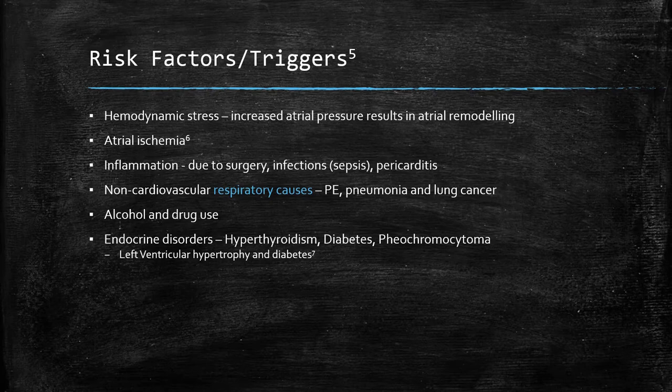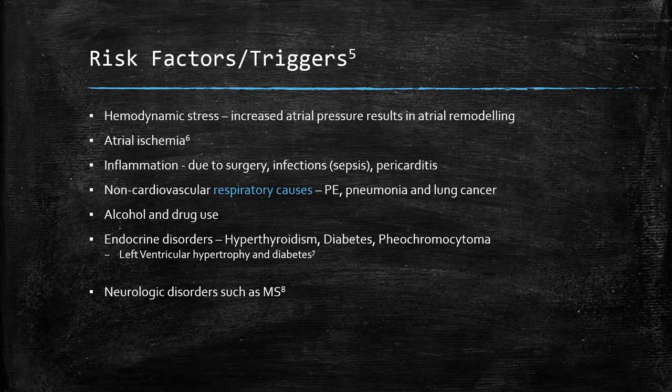Interestingly, analysis of the Framingham study suggests that left ventricular mass increased with worsening of glucose tolerance, and the trend was more striking in women than in men. Increasing age, neurological disorders, and genetic factors are all associated with the condition.